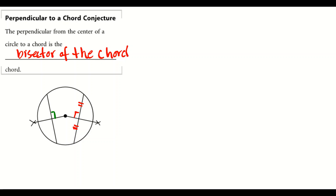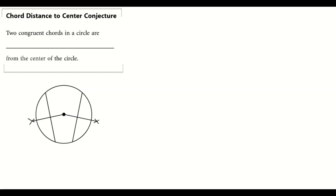This chord has been broken into two congruent parts. The same applies on the other side — if a radius intersects a chord at a perpendicular 90-degree angle, it forms two congruent segments of that chord.